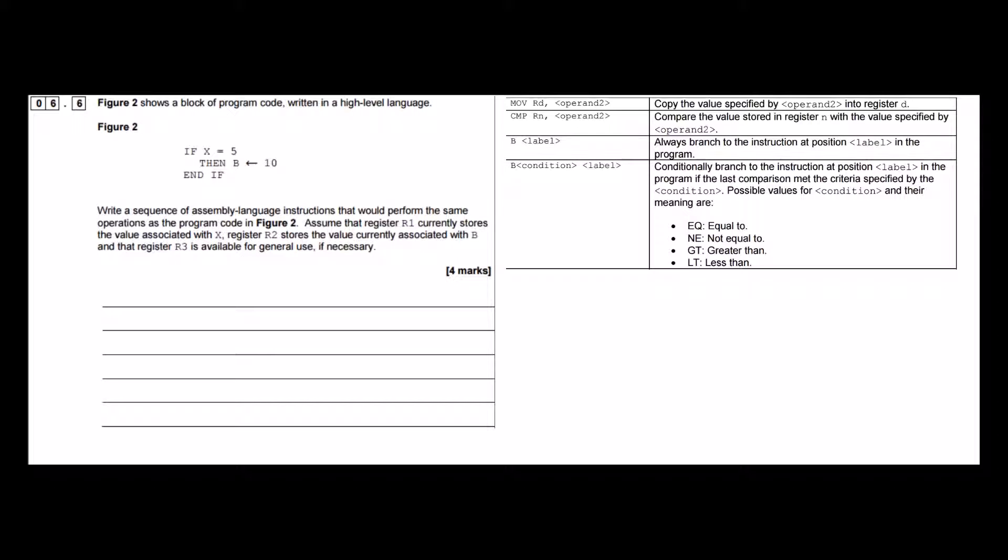So let's start off by looking at the first line here. We've got an if statement and that implies that we're going to, and it's got a condition, so that implies that we're going to have to conditionally branch, because we've got a condition here.